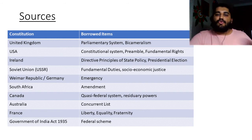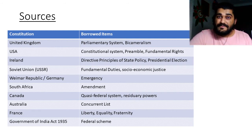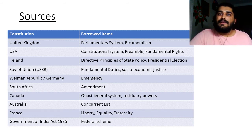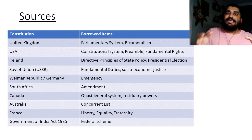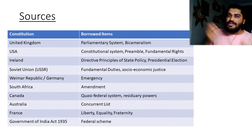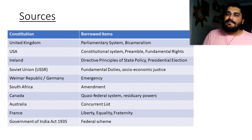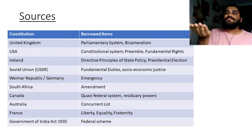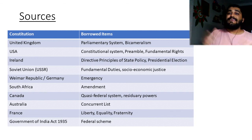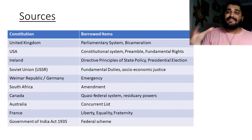Before we go on to what else we took from these countries, we also need to understand that India is a union of states. As a union of states, it is a quasi-federal system. We are not an entirely federal system where the government at the center is totally equal to the governments at the state, nor are we an entirely unitary system where the central government is so powerful that the states don't really have power. We have a quasi-federal system where the states are somewhat inferior to the center, but the center does not create so much power differential that the states don't have an individual existence. India is a union of states — these states come together to constitute India.